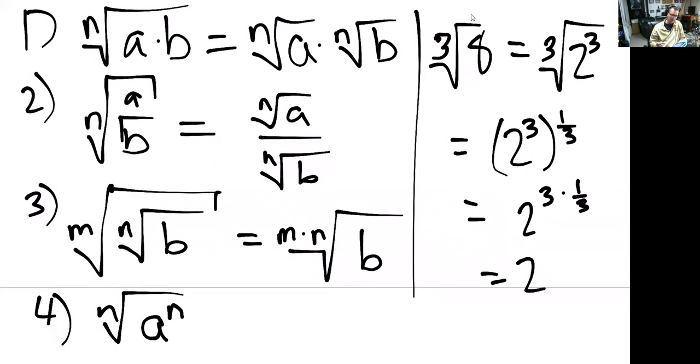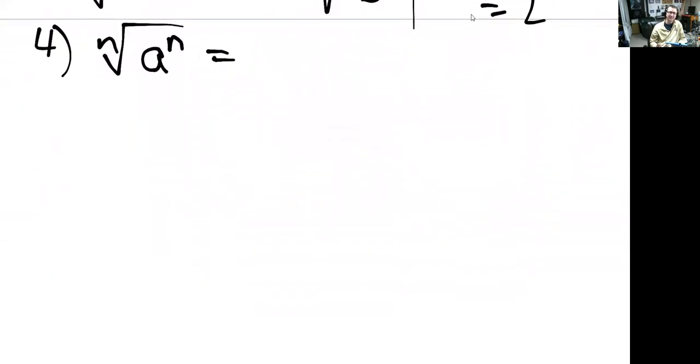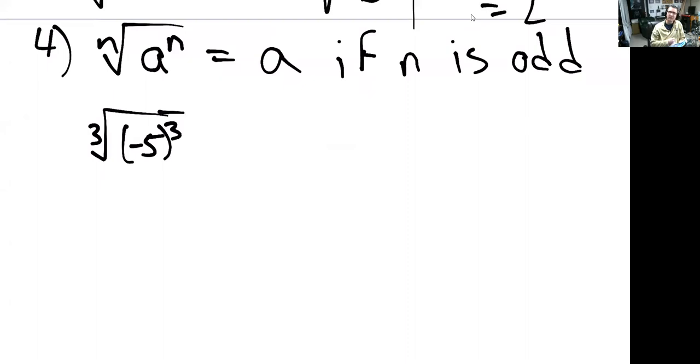So this last one says, if you have an nth power exponential underneath an nth root, it's a. But it is a little trickier than that. If n is odd, this is true. So I can give you a nice example there. Third root of negative five to the third. That's the third root of negative five cubed, so it's negative five.